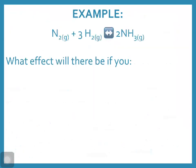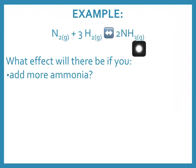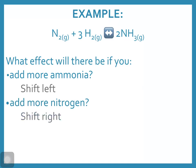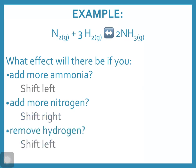Using the Haber process — N2 and H2 combining to make NH3 — as an example: if we add more ammonia (a product), we shift away towards the reactants to counteract that change. If we add more nitrogen (a reactant), we shift right towards the products. And if we remove hydrogen (a reactant), we're decreasing reactant concentration, so the system shifts left to make more reactant and replace the hydrogen that was removed.